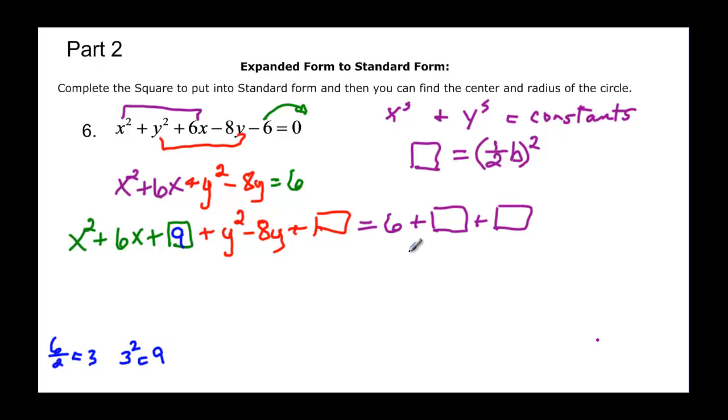So we have 9 here, but we have to add it to this side as well. And then we have negative 8 divided by 2, which is equal to negative 4, and negative 4 squared is equal to 16, and that's what we're going to add to both sides.